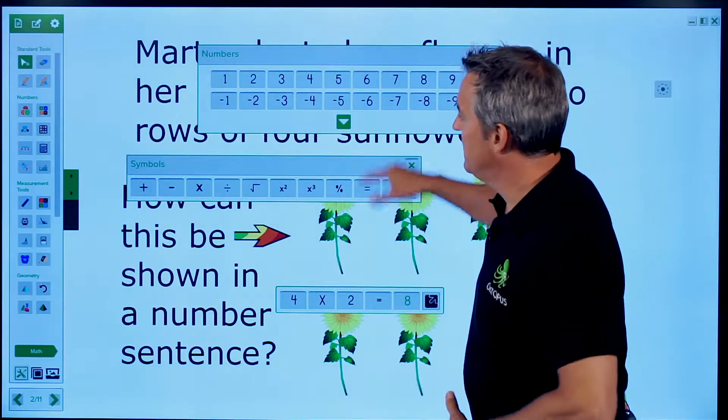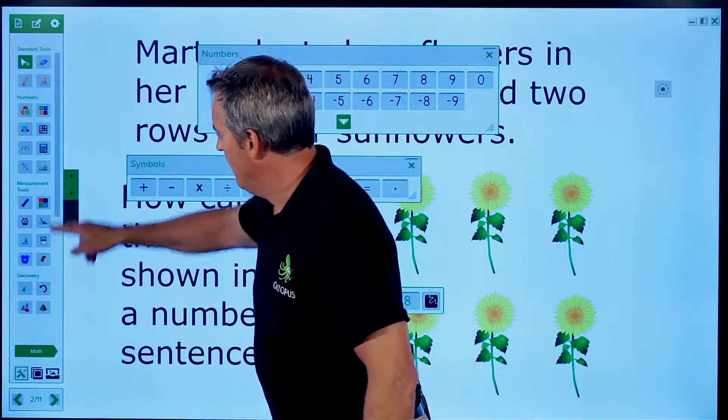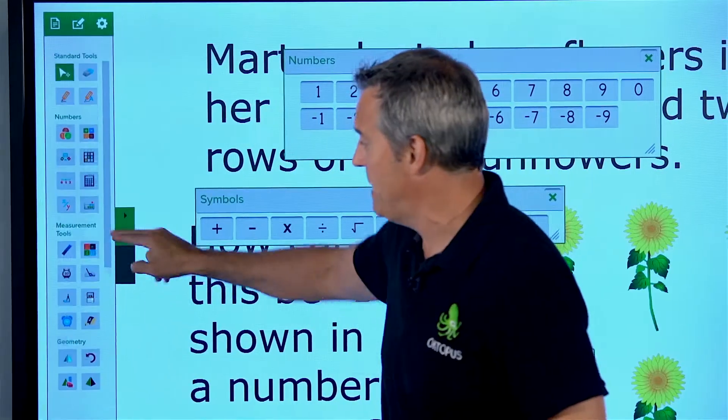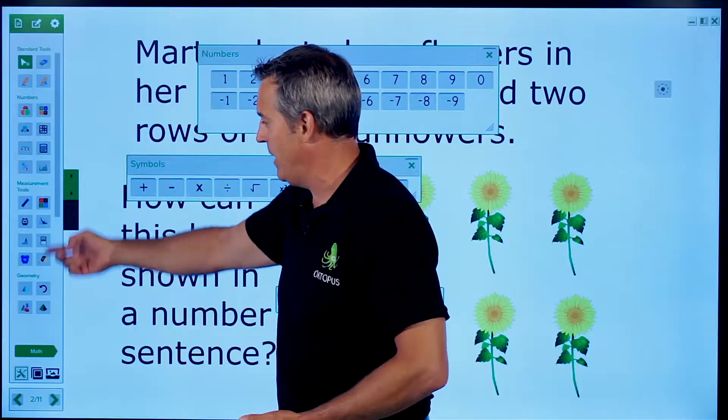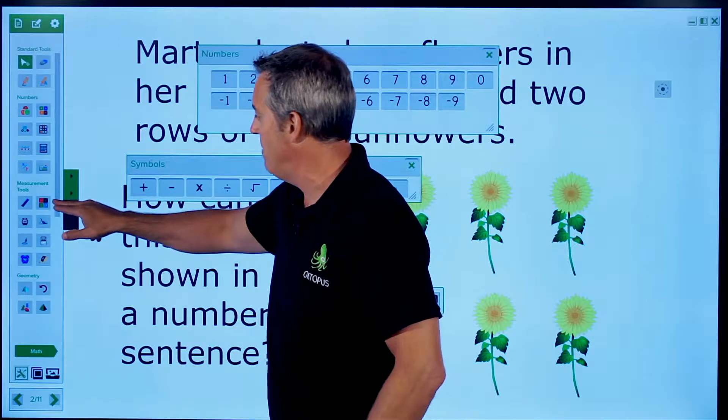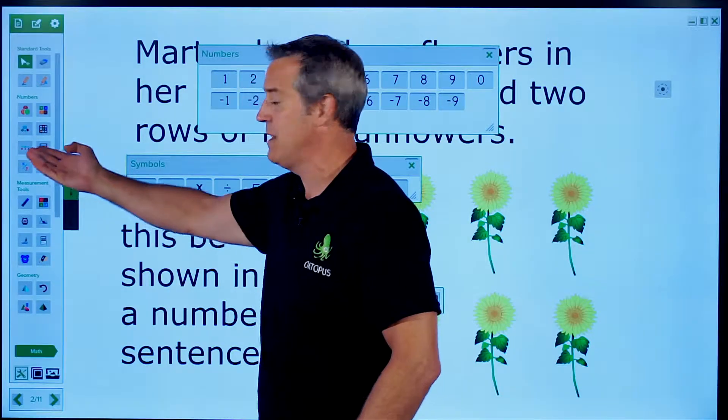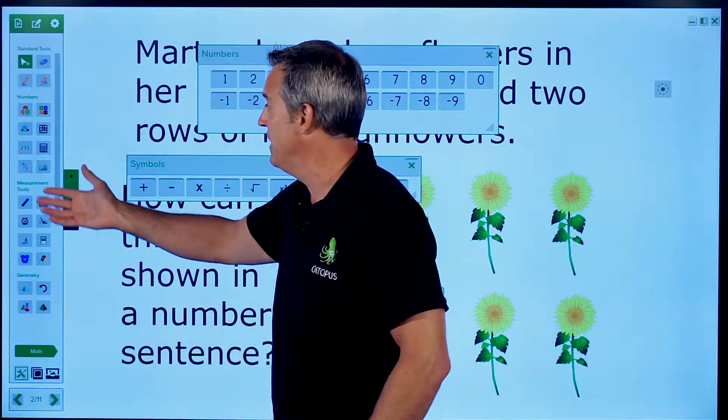So we can use these tools within the number system here. And there's a lot of different tools, and it's going to depend on what you're teaching. If I'm working with angles, I'm going to bring out the protractor, or I'm going to bring out my angle tools. If I'm teaching with number lines, we have number lines that we can use.